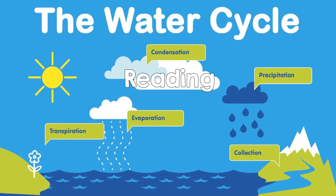The water cycle is the movement of water in the environment by evaporation. The water cycle causes liquid water to evaporate, meaning to change from a liquid into a gas or a vapor, and it rises into the sky.